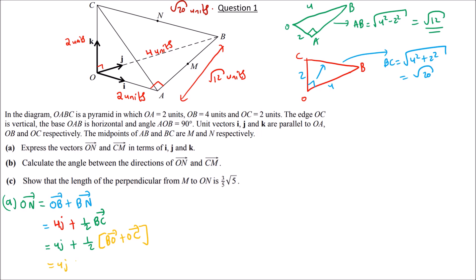Continuing: 4J + half of (BO + OC). From B to O has length 4, direction negative J, so it is negative 4J. From O to C has length 2, direction K, so it is 2K. Simplifying: ON = 4J + half(−4J + 2K) = 4J − 2J + K = 2J + K.